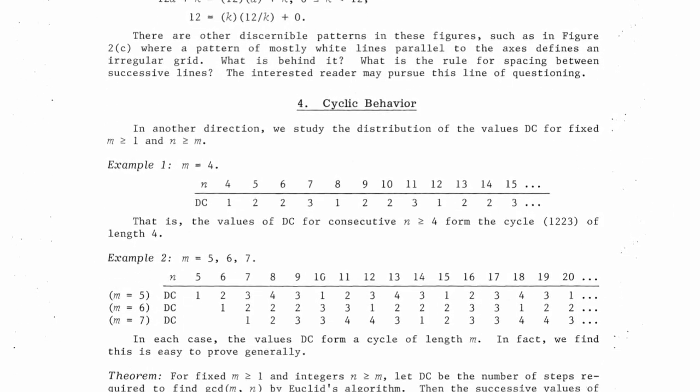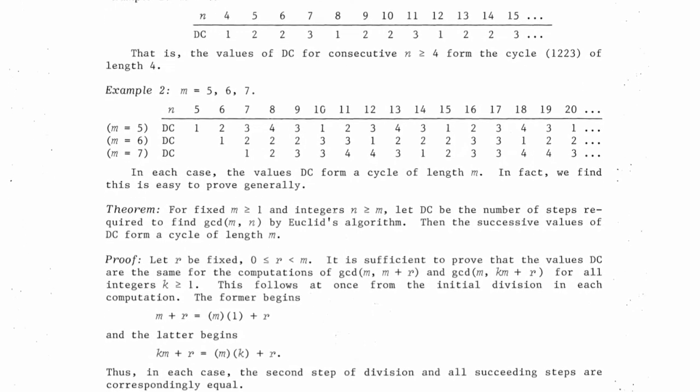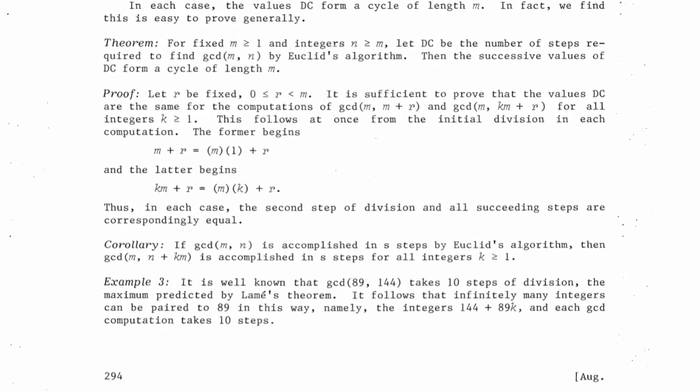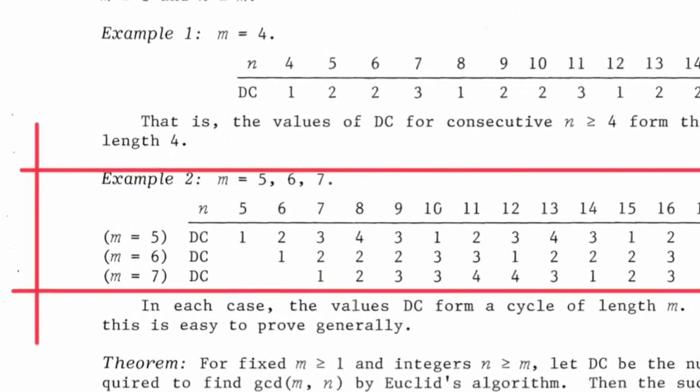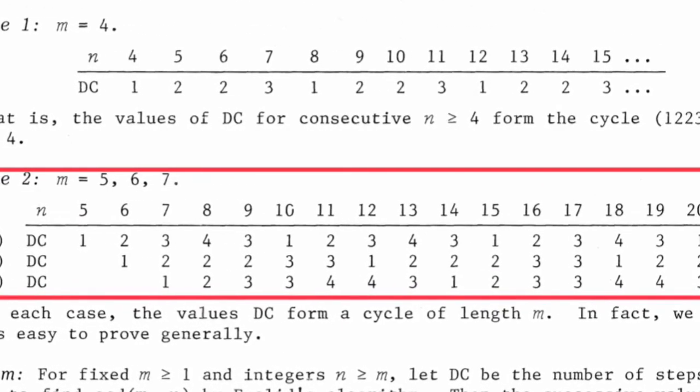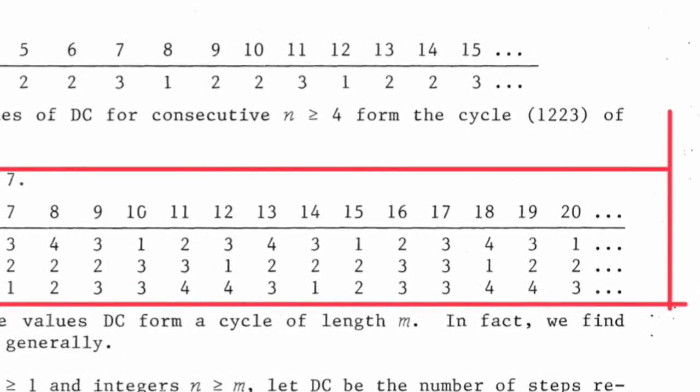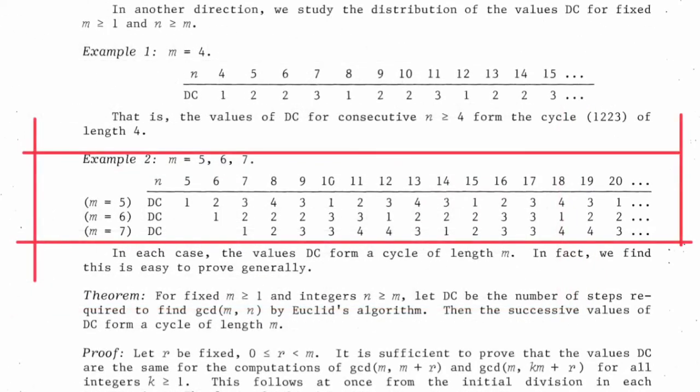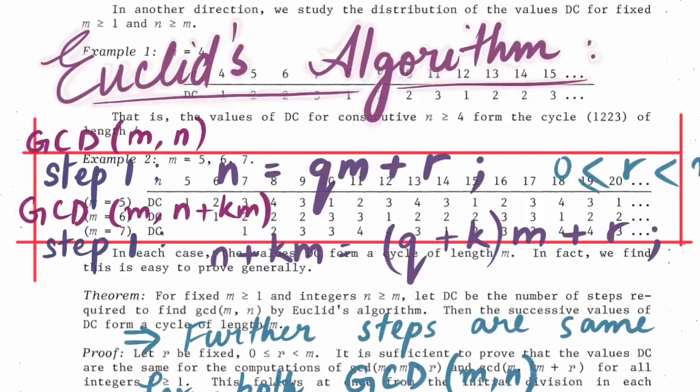Another aspect covered in the paper is about the cyclic behavior of division steps for some fixed N greater than or equal to 1, considering all M greater than or equal to N. For example, consider this table for N equals 5, 6 and 7. The key observation is that in each case, the values of DC form a cycle of length N. It can be shown that if GCD of M and N is accomplished in, say, S steps by Euclid's algorithm, then GCD of M and N plus KM is also accomplished in S steps for all integers K greater than or equal to 1.